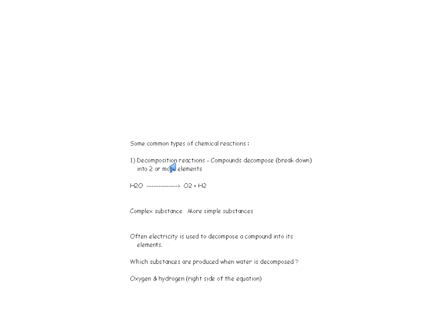Let's talk about what a decomposition reaction is. When compounds decompose — meaning break down — they break down into two or more elements. For instance, water is a compound and it breaks down or decomposes into oxygen and hydrogen, and electricity will cause that to happen. A complex substance is broken into simpler substances when decomposition occurs.